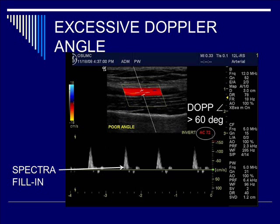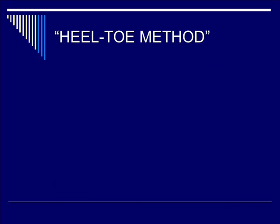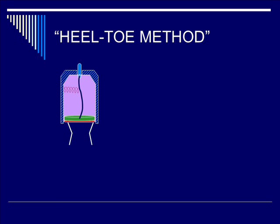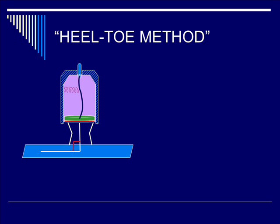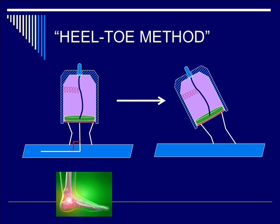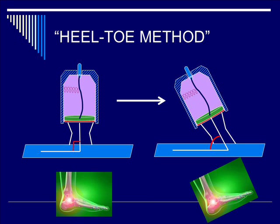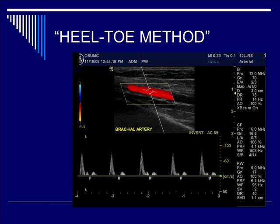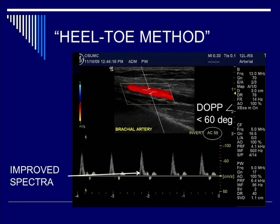Therefore, you want to avoid that situation whenever possible. The heel-toe method is a technique where you angle the probe to avoid 90 degrees of angle of inclination. You can visualize it with the lower leg as the transducer and the foot as the vessel. By angling the transducer such that pressure is on the proximal end and the distal end is lifted up, you modulate the angle from 90 to hopefully less than 60 degrees. By employing the heel-toe method, you're able to reduce the Doppler angle from 72 to 59 degrees, resulting in a cleaner spectra and more accurate velocity measurements.